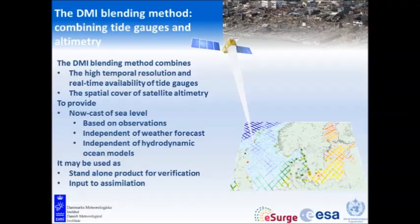Most often you will not have a satellite nearby when you need it, so we thought about what we can do in our region. We have plenty of tide gauges and a quite long record of satellite data — so why not combine them? We made a blending method that makes the best of the high temporal resolution of the tide gauges in real time, and the spatial coverage of the satellite data. We use it to provide a nowcast of the sea level — not a forecast, but an observation-based nowcast that is independent of the weather forecast and independent of any hydrodynamic model.